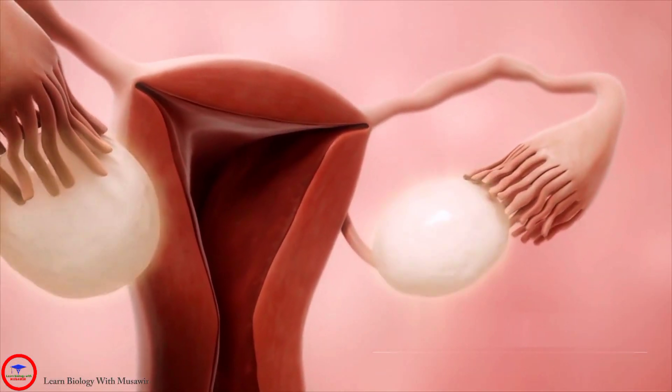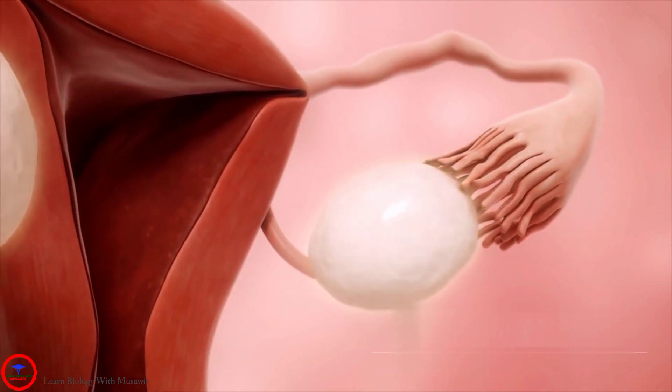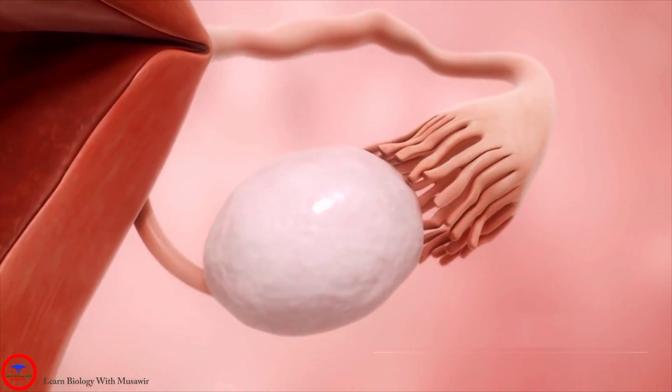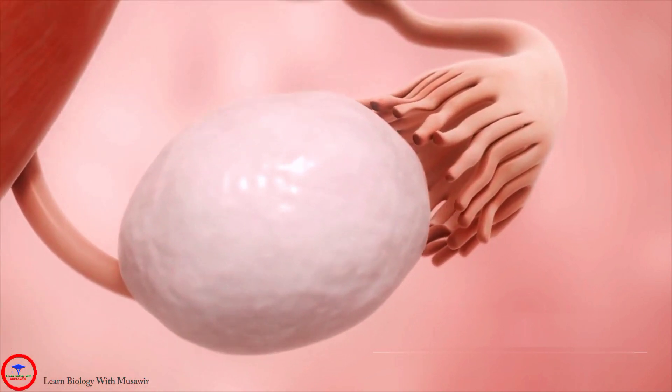Ovulation is the release of an egg from one of the ovaries. It often happens about midway through the menstrual cycle, although the exact timing may vary.